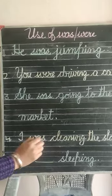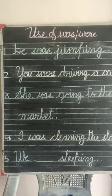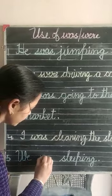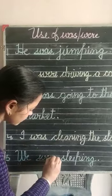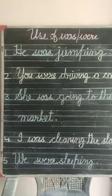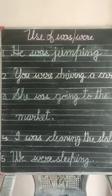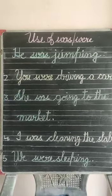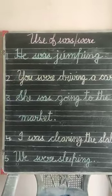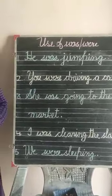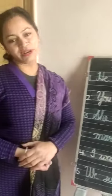We dash sleeping — hum so rahe the — we ke saath were. We were sleeping. So in this way you have to do these sentences. I hope you have understood this topic very well. So keep on doing the practice. Thank you.